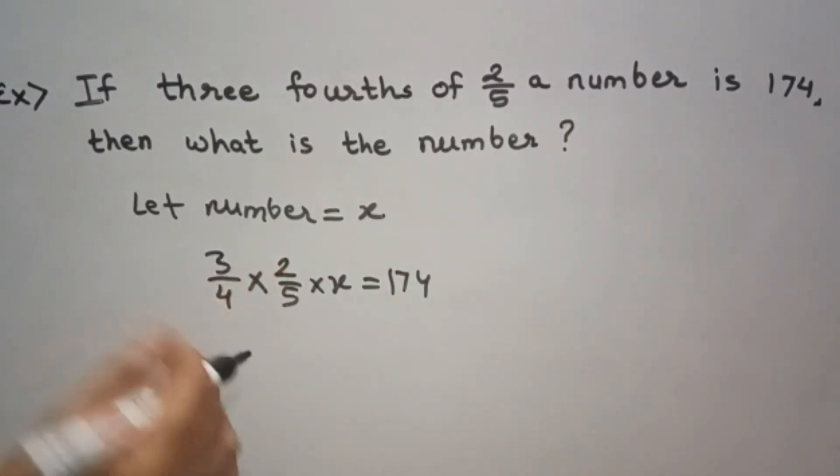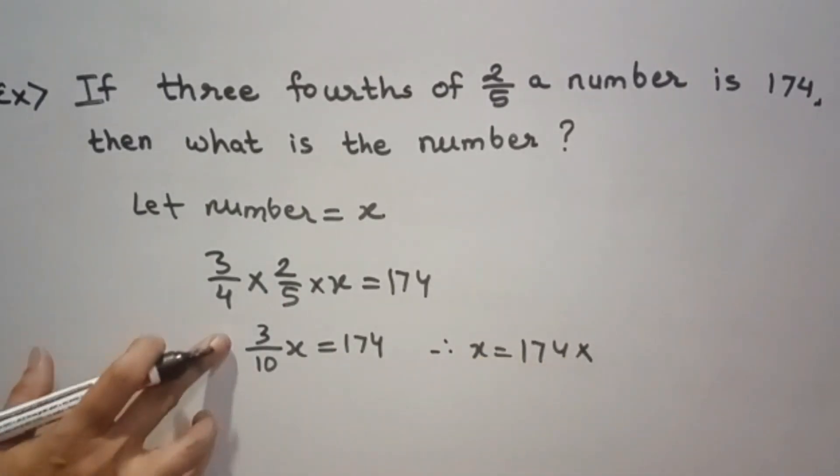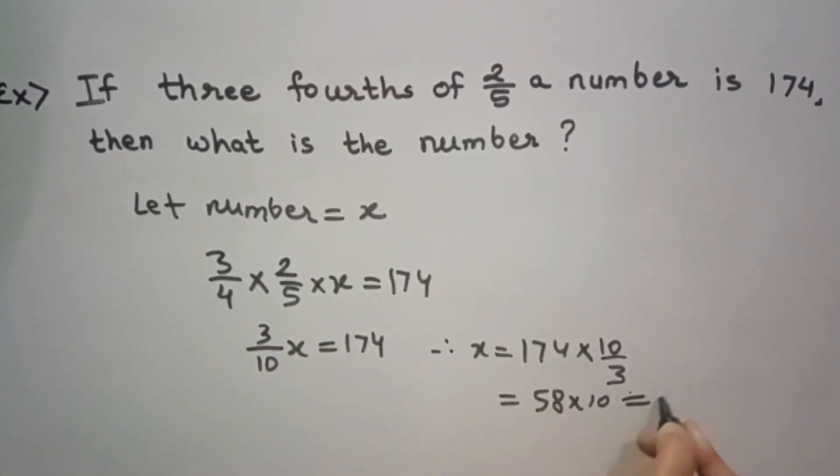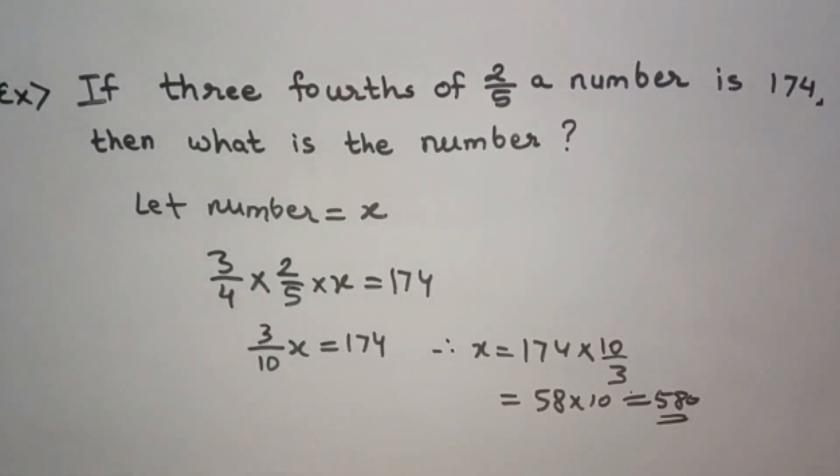2 ones are 2, 2 twos are 4. So this will become 3 by, 5 twos are 10, x is equal to 174. Therefore x is equal to 174 into, we will take this term to the right side, 10 by 3. 3 fives are 15, 3 eights are 24, into 10 which is 580. This is our final answer.